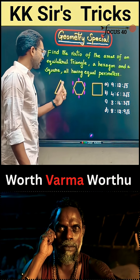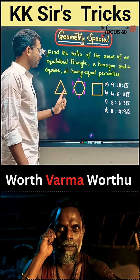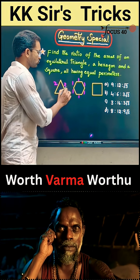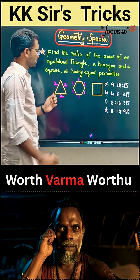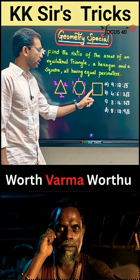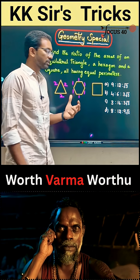Distributing the 6 centimeter perimeter to the triangle: 6 divided by 3 sides gives each side as 2 centimeters. For the square: 6 divided by 4 sides gives each side as 1.5 centimeters.